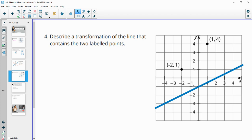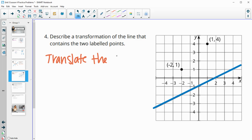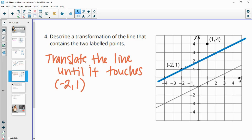All right, then number four, describe a transformation of the line that contains these two labeled points. So we could just move the line so that it hits one of these points. We're going to translate it up. And I mean this could go anywhere. This line just has to hit one of the points. So let's just say translate the line until it until it touches one of the points. You can pick either one. I'm going to do negative 2,1. Okay, until it touches or intersects with negative 2,1. And so we just move that line to there.